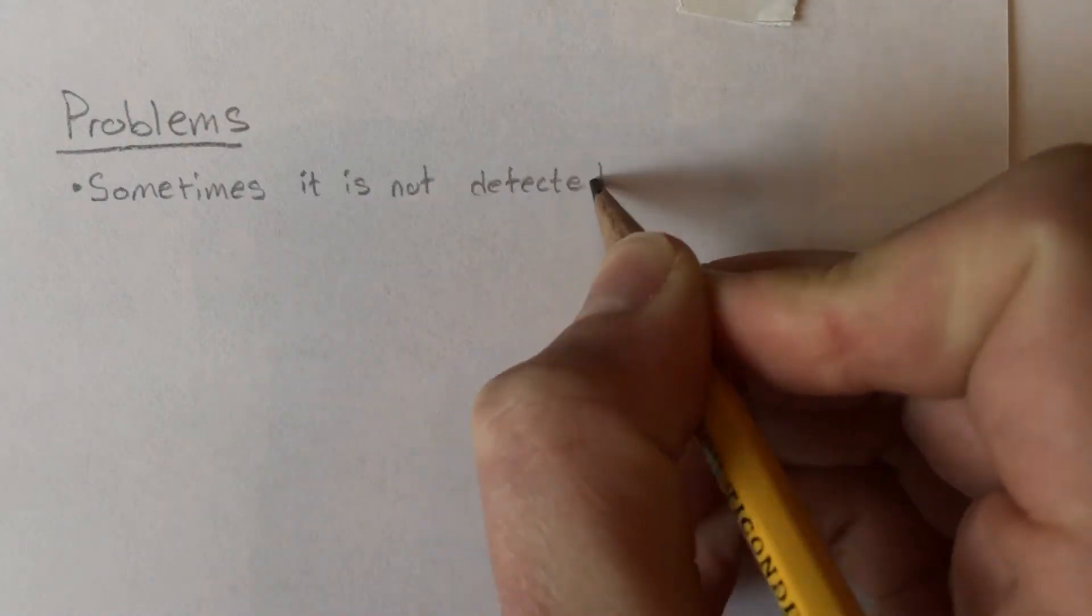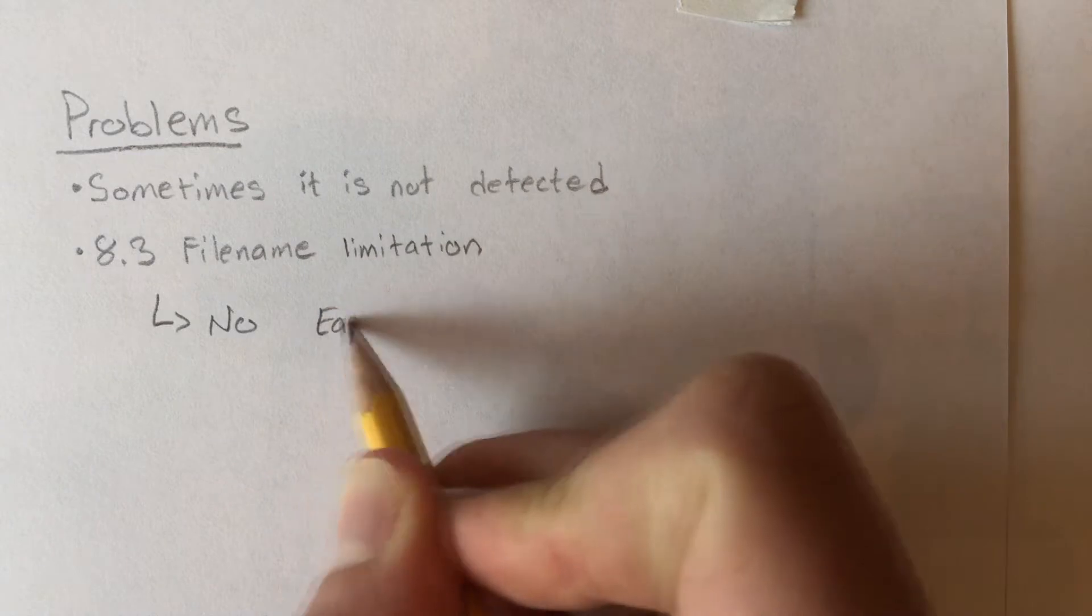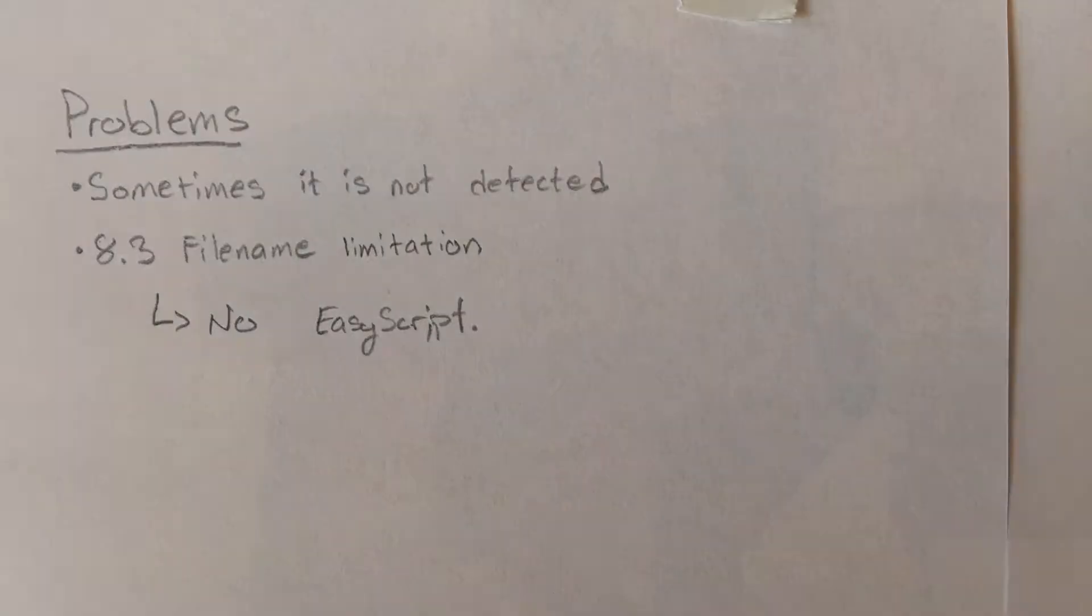It was not without its problems, however. Occasionally, it would not be detected by the C64, and it was also restricted by the 8.3 filename format of the FAT file system that was used on the SD card. This meant that multi-file programs with long filenames could not be loaded.